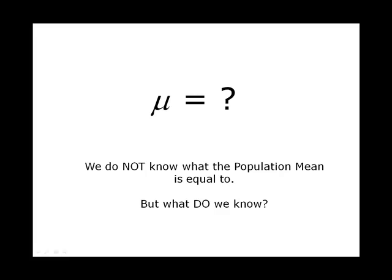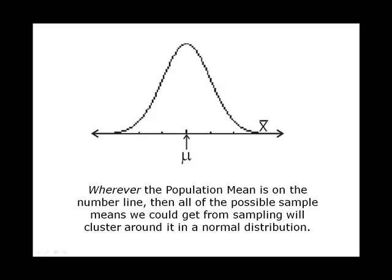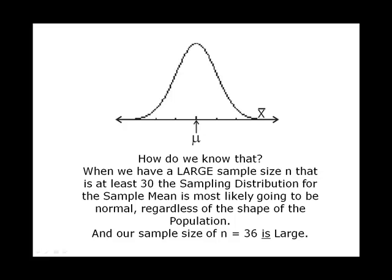We do not know what the population mean is equal to, but what do we know? Wherever the population mean is on the number line, all of the possible sample means we could get from the sampling distribution will cluster around it in a normal distribution. When we have a large sample size — that is, at least 30 — the sampling distribution for the sample mean is most likely going to be normal, regardless of the shape of the population. And our sample size of 36 is large.